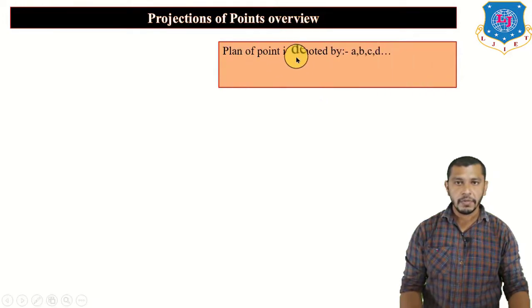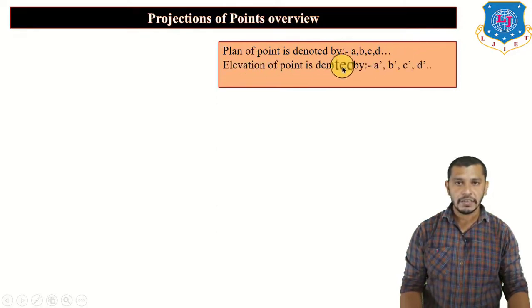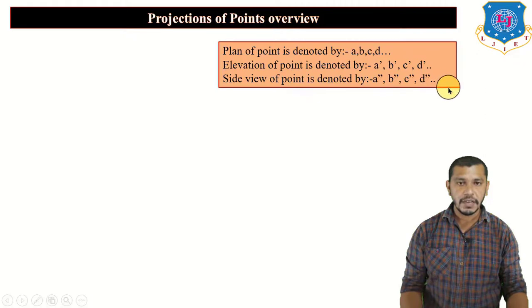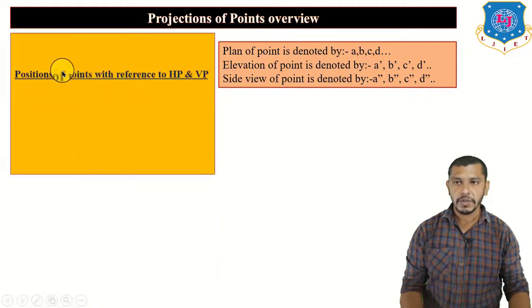The plan of the point is denoted by small a, b, c, d, e up to z. The elevation of the line is denoted by a-dash, b-dash, c-dash, d-dash. The side view of the point is denoted by a-double-dash, b-double-dash, c-double-dash, d-double-dash. Now let us see the position of the point.